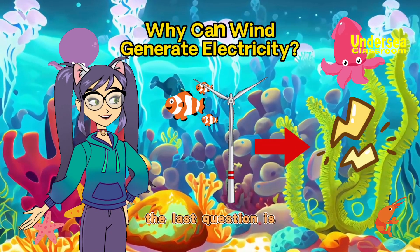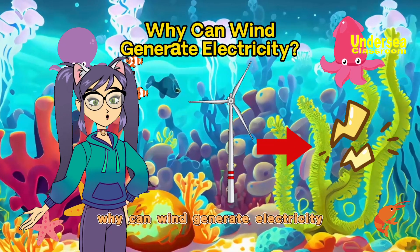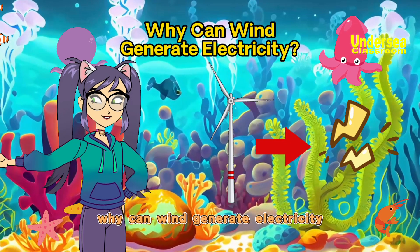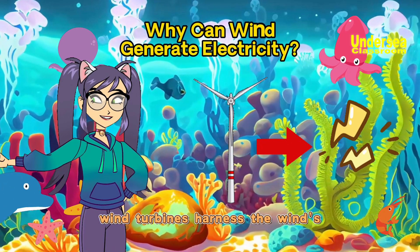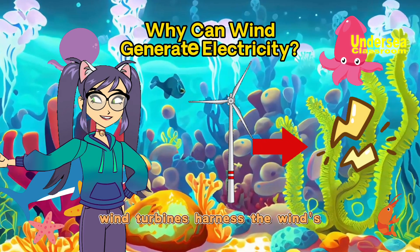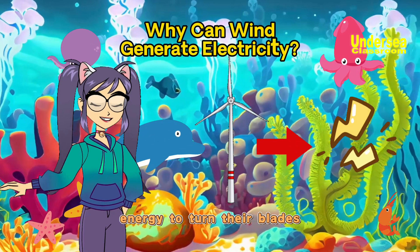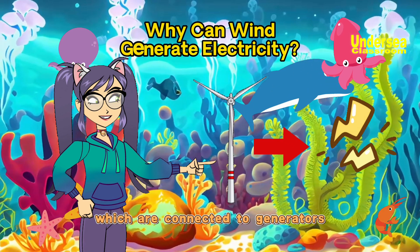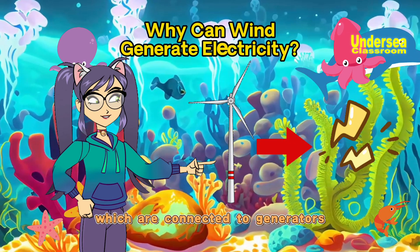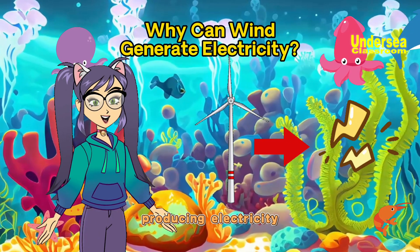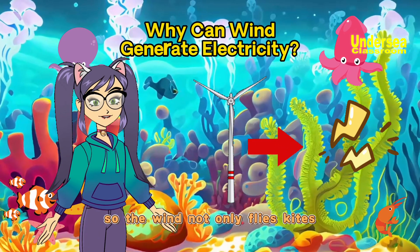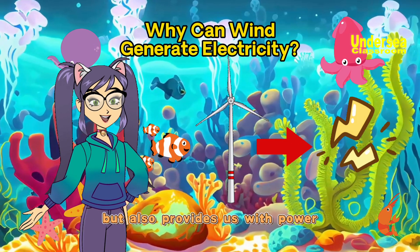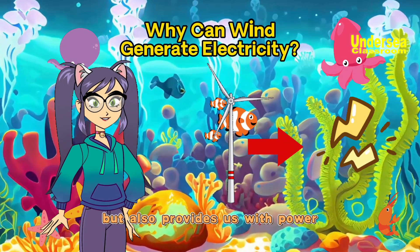The last question is, why can wind generate electricity? Wind turbines harness the wind's energy to turn their blades, which are connected to generators, producing electricity. So the wind not only flies kites, but also provides us with power.